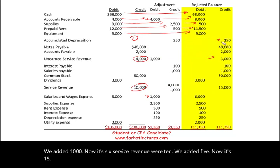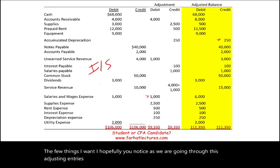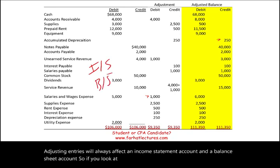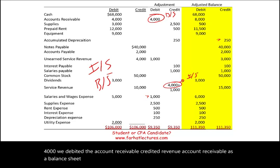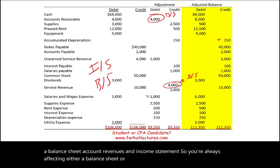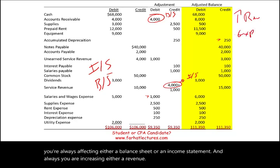A few important things to notice as we go through this: adjusting entries always affect an income statement account and a balance sheet account. For example, the $4,000 accrued revenue entry debits accounts receivable — a balance sheet account — and credits revenue — an income statement account. So you're always affecting either a balance sheet or an income statement account, and always increasing either a revenue or an expense.